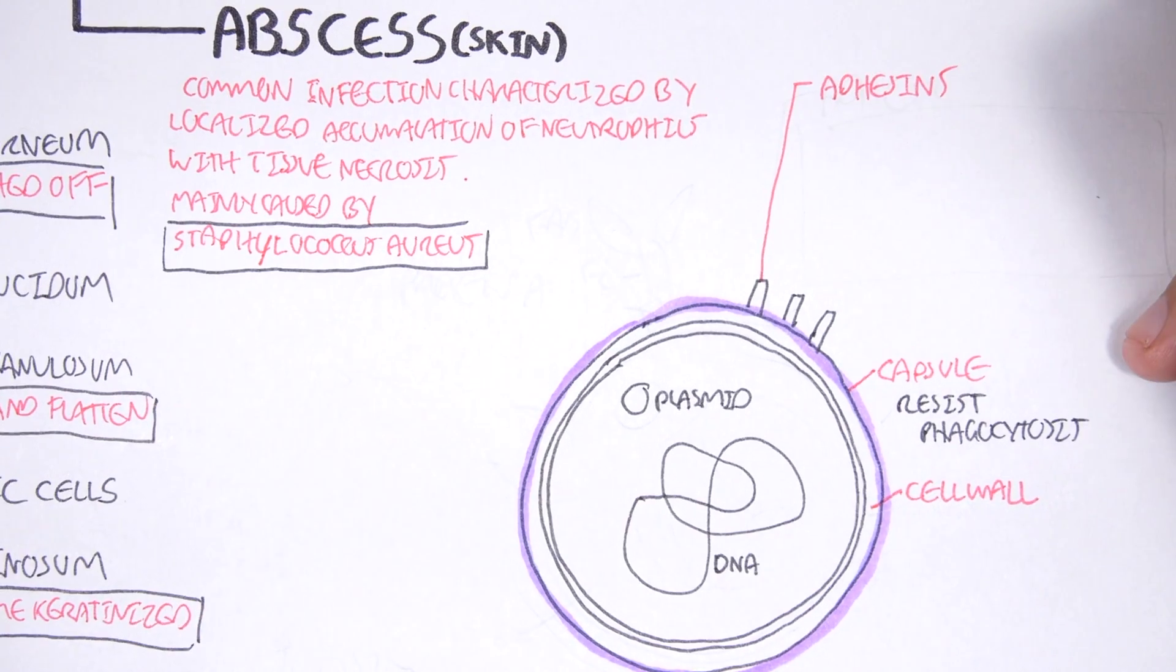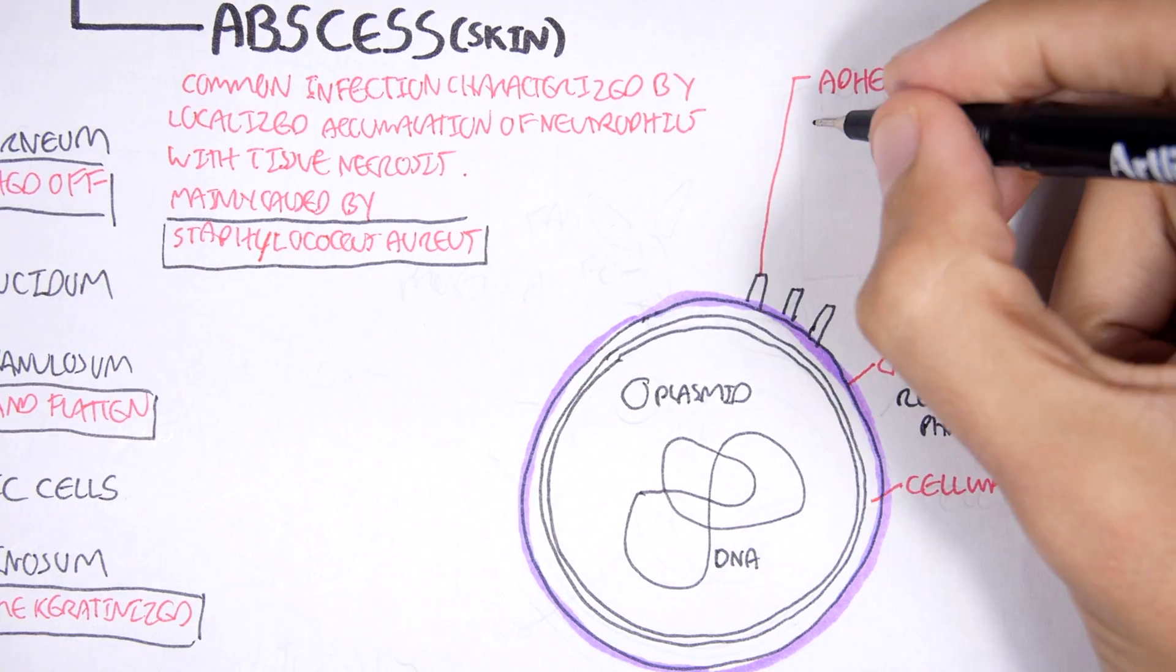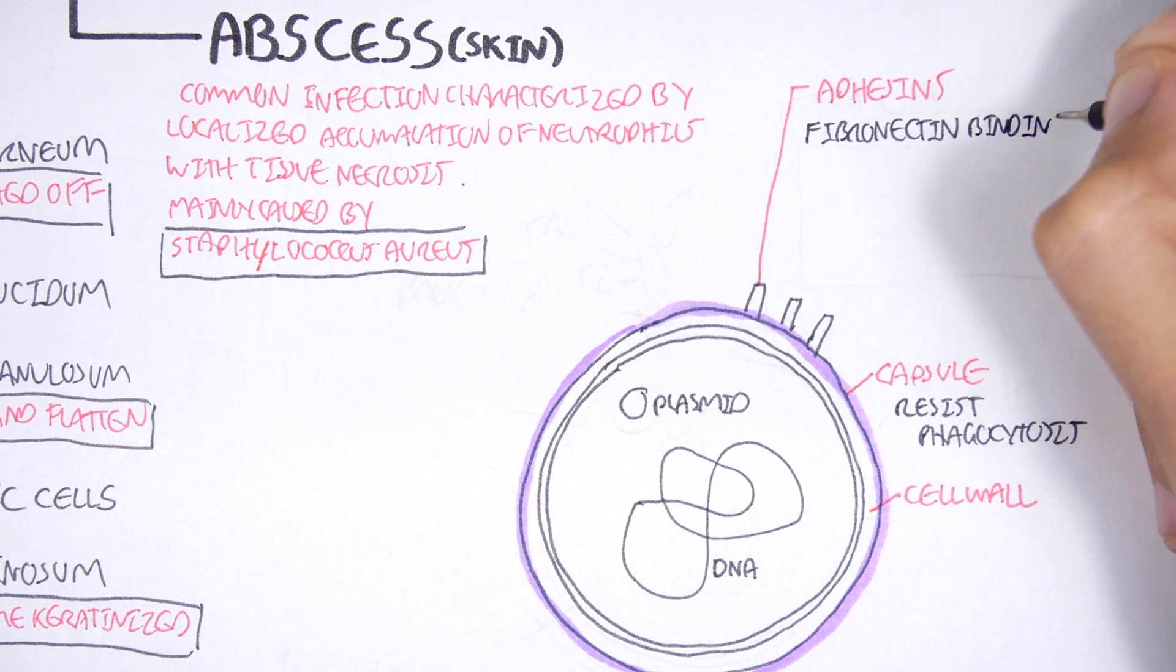Staphylococcus aureus also contains adhesins, which are protein molecules or carbohydrates that bind onto, latch onto cells within the body, allowing it to invade the cell. These adhesins include fibronectin-binding protein and collagen-binding protein.